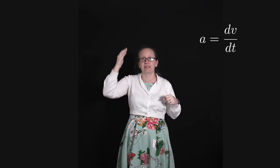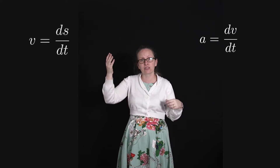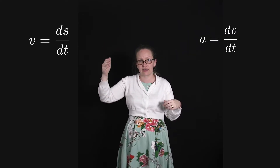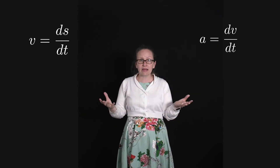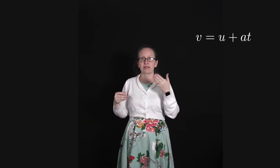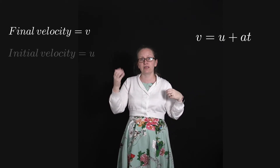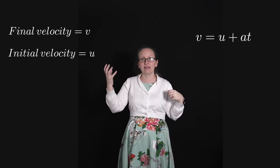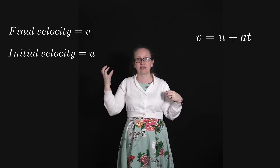We can derive the kinematic equations just using acceleration equal to dv/dt, the derivative of the velocity with time, and that the velocity is equal to ds/dt, the derivative of the displacement with time. The first kinematic equation can be written as v = u + at, where v is the final velocity, u is the initial velocity, a is the acceleration, which has to be constant, and t is time.